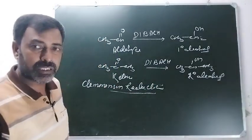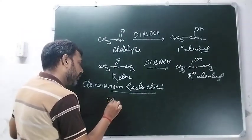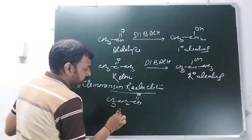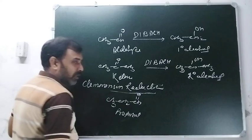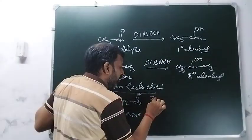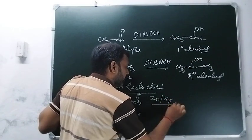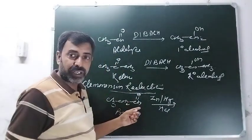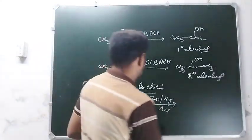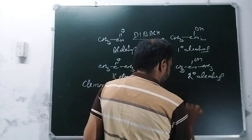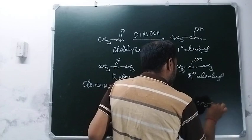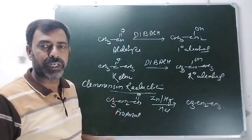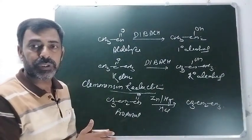Clemmensen reduction के बारे में बात करें तो - यह है कोई aldehyde या ketone। मैंने यहाँ पे aldehyde लिया है: CH3, CH2, CHO - the compound is called propanal. और जब हम इसे treat करते हैं zinc amalgam (ZnHg) in presence of hydrogen provider and acid (HCl), तो इसका reduction होता है। Strong reducing agent है, इस वजह से reduction में बनने वाला product एक alkane होता है - so it is CH3 CH2 CH3.